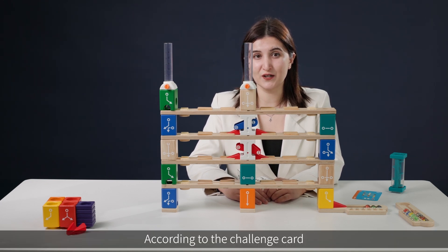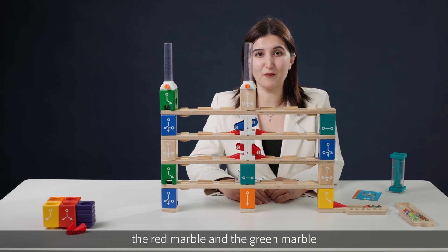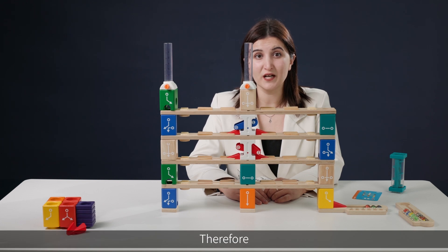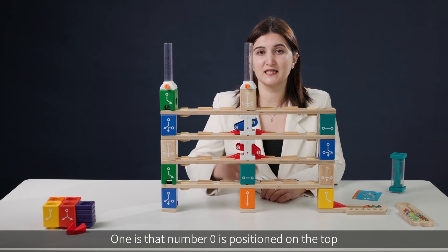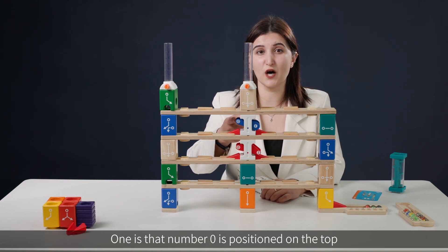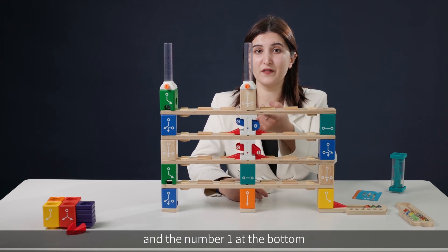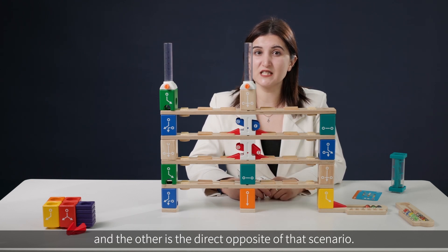According to the challenge card, the red marble and the green marble should be launched at the same time. Therefore, there are two possibilities regarding the blue seesaw. One is that number zero is positioned on the top and the number one at the bottom. And the other is the direct opposite of that scenario.